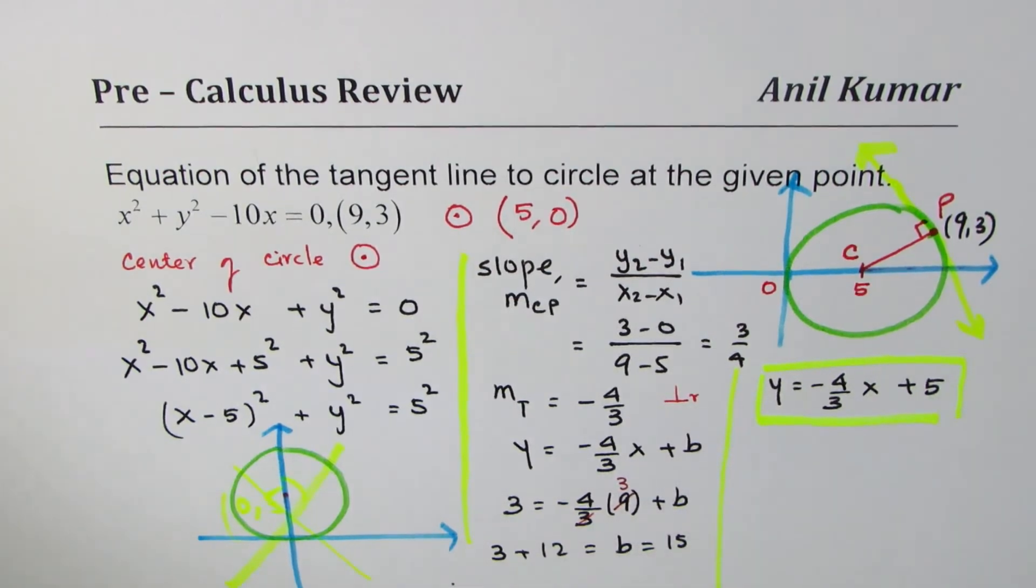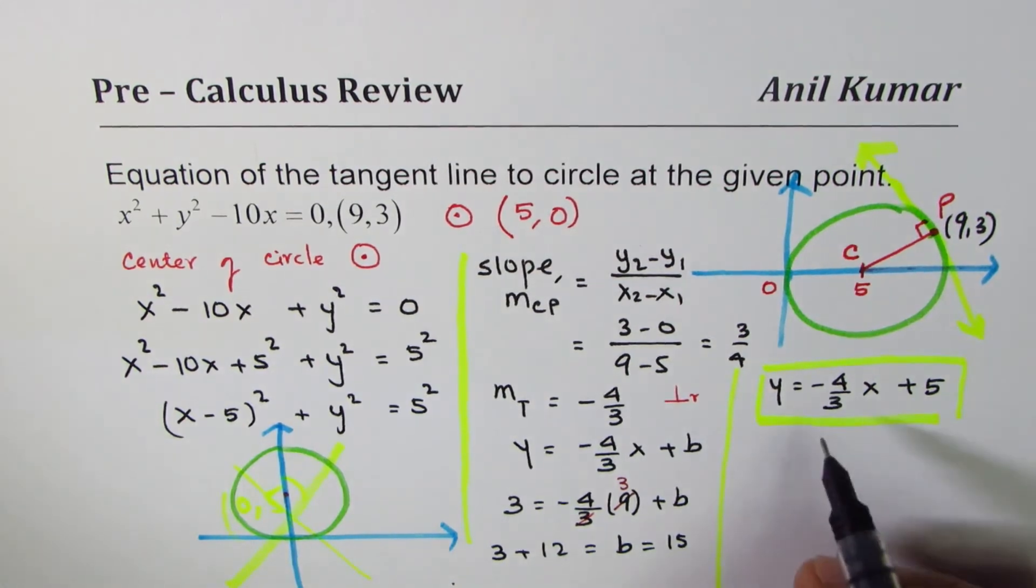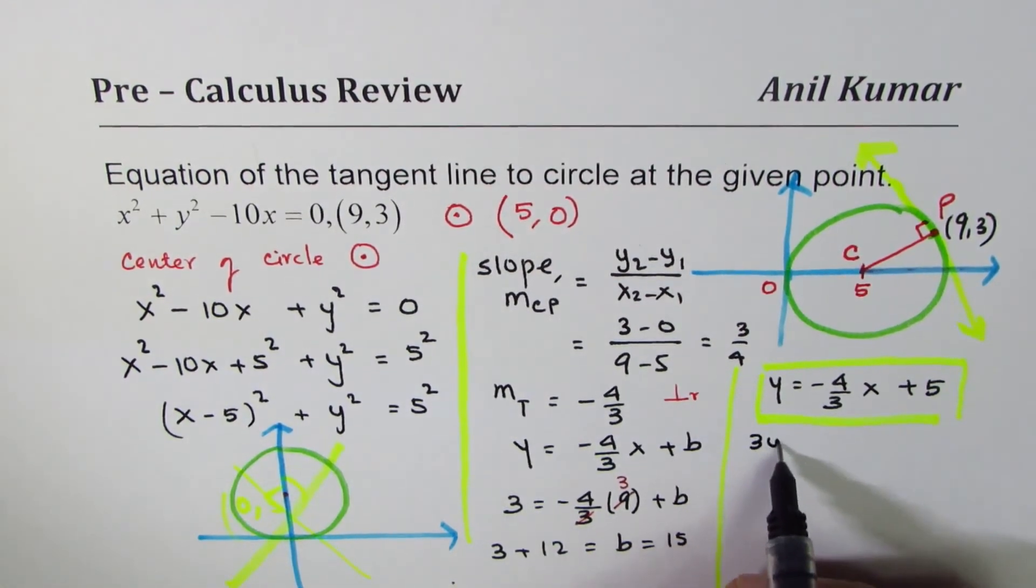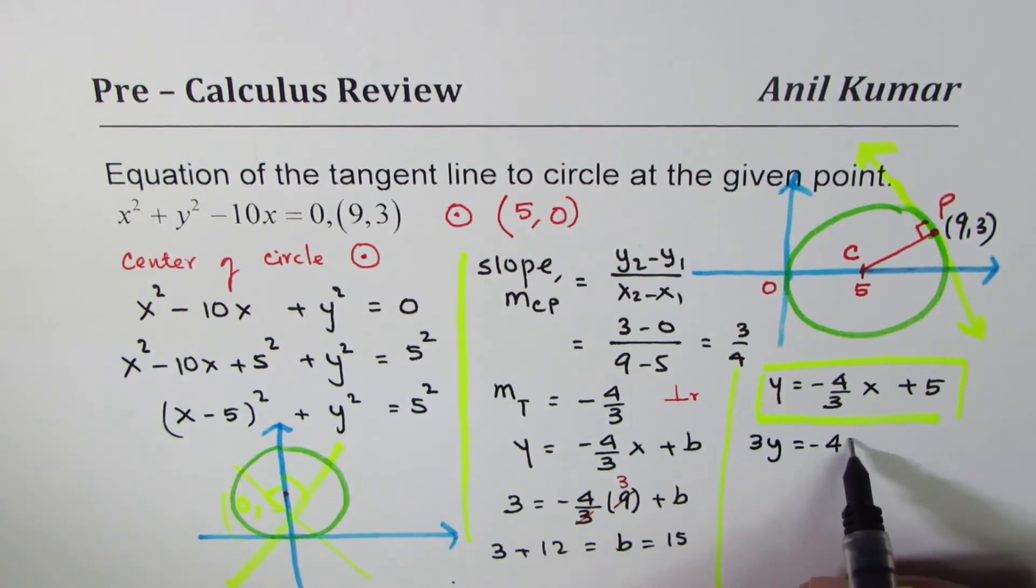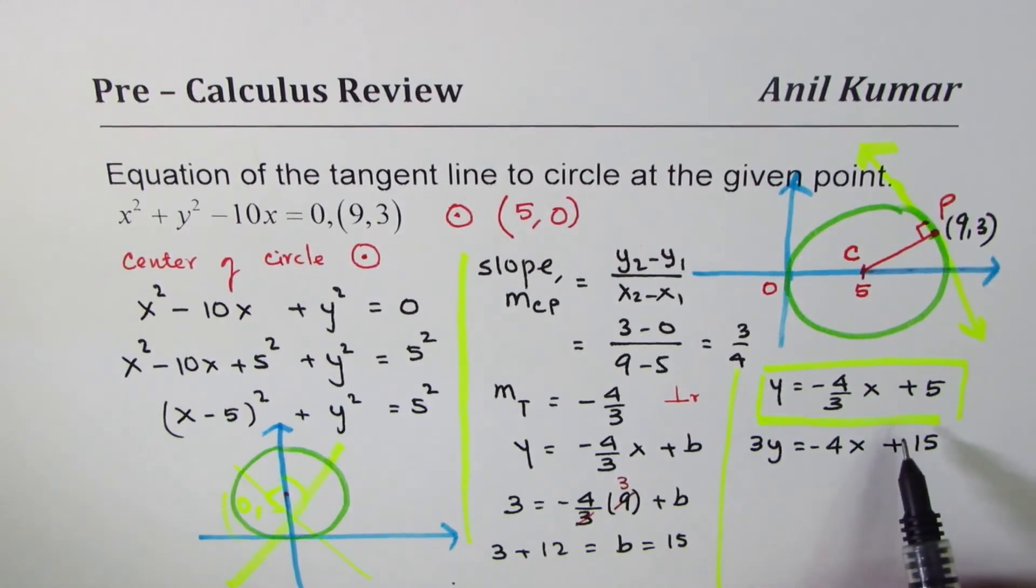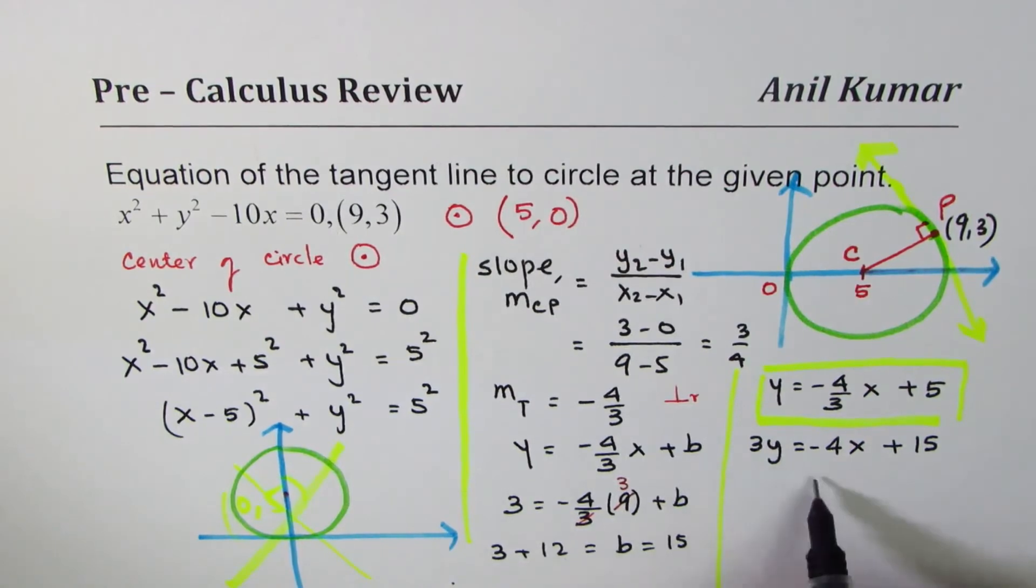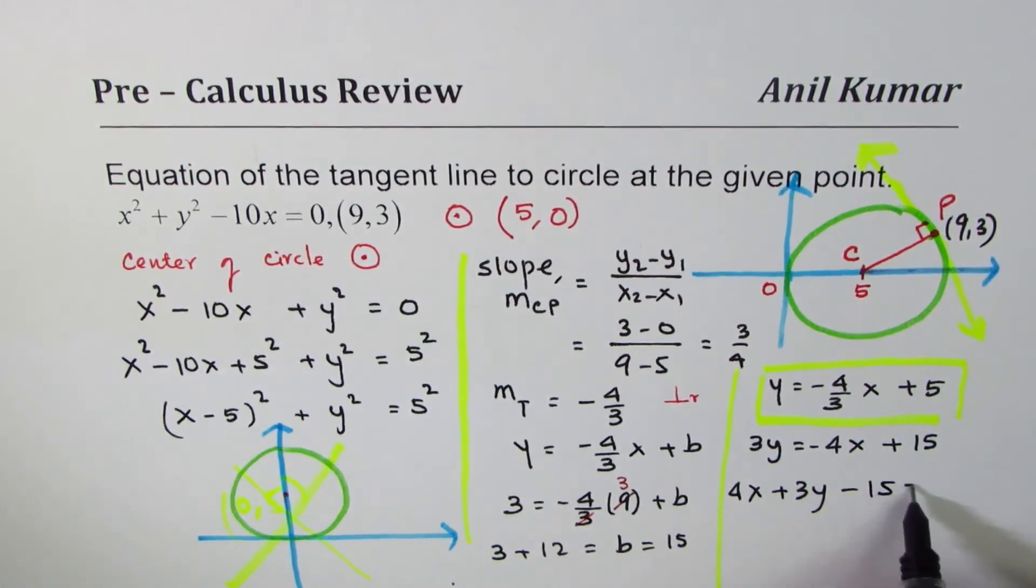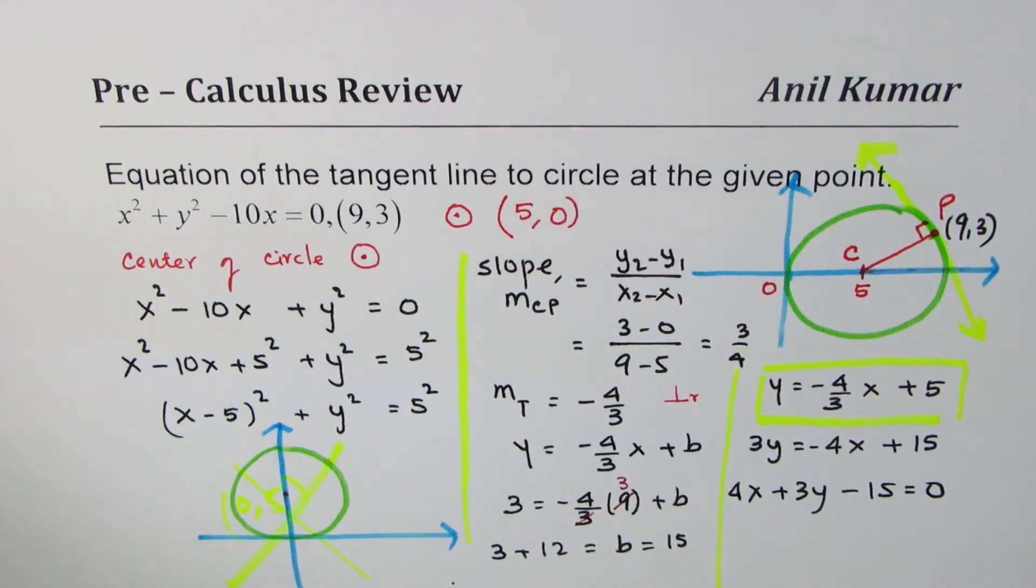This solution is in slope-intercept form. If you want, you can write this in standard form also. Let's do that. Multiplying by 3 gives me 3y = -4x + 15. I am doing this since that is also a part of learning as you move forward to calculus. Bring all the terms to one side. 4x + 3y. Always keep this coefficient positive in standard form. Minus 15 equals to 0. You may be required to write your equation of the line in standard form.